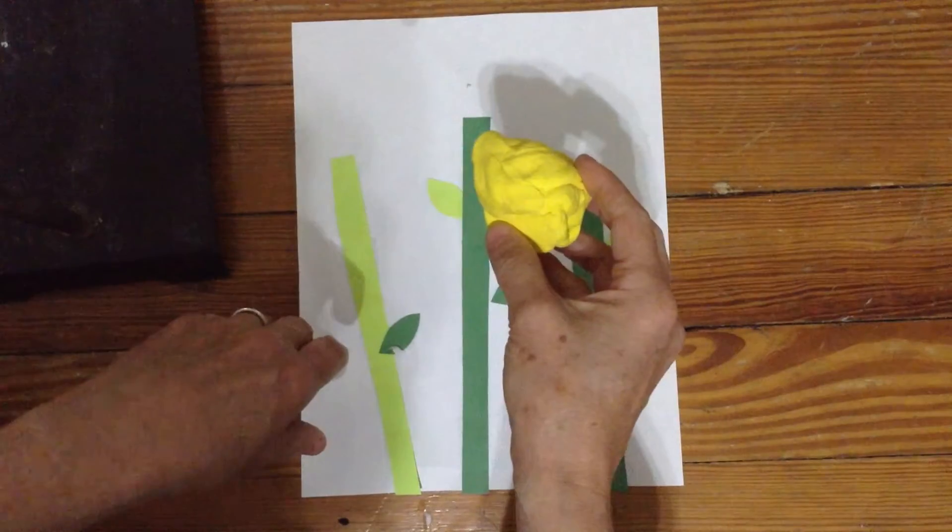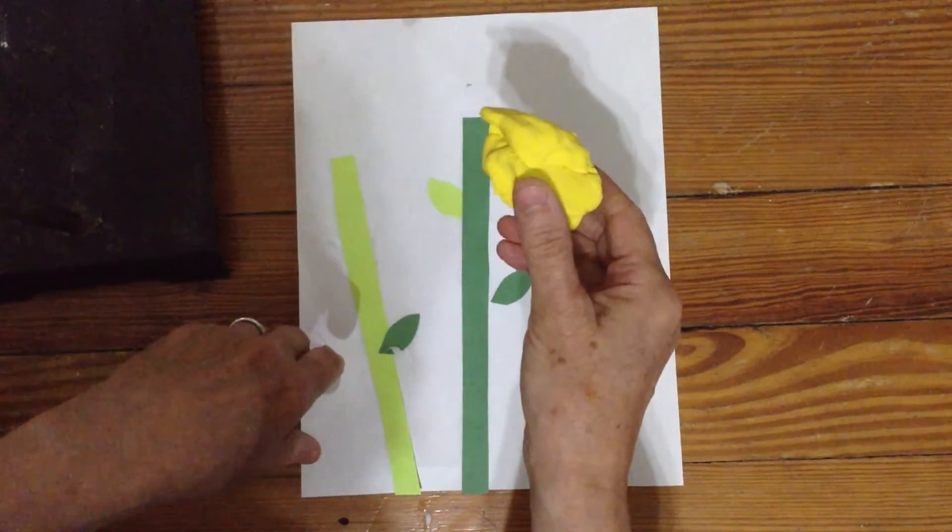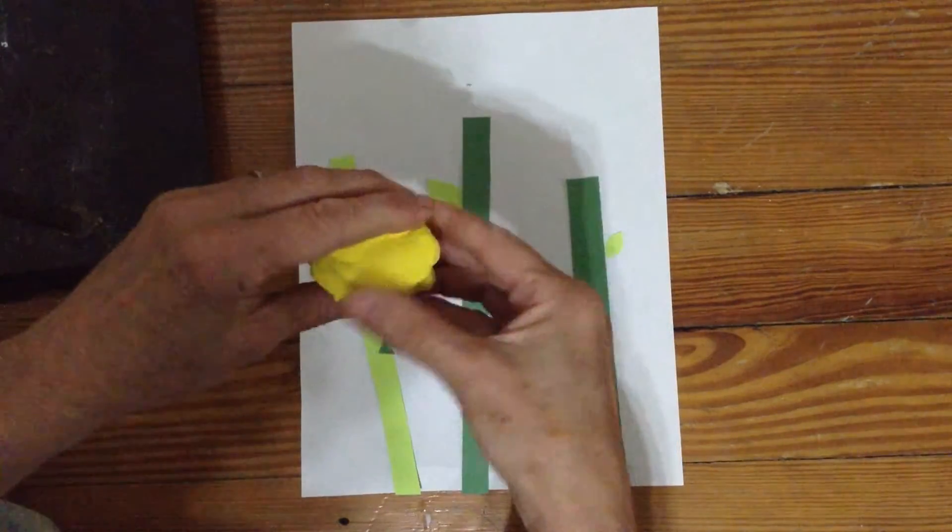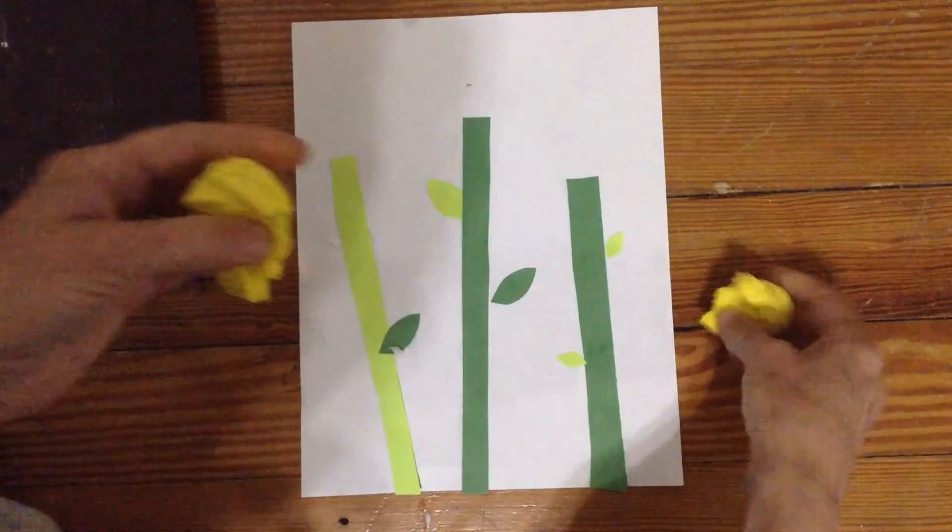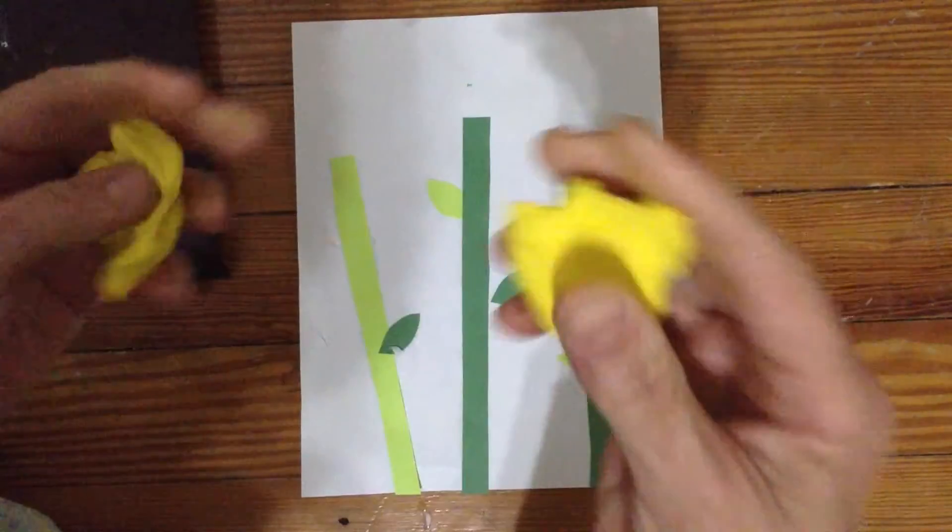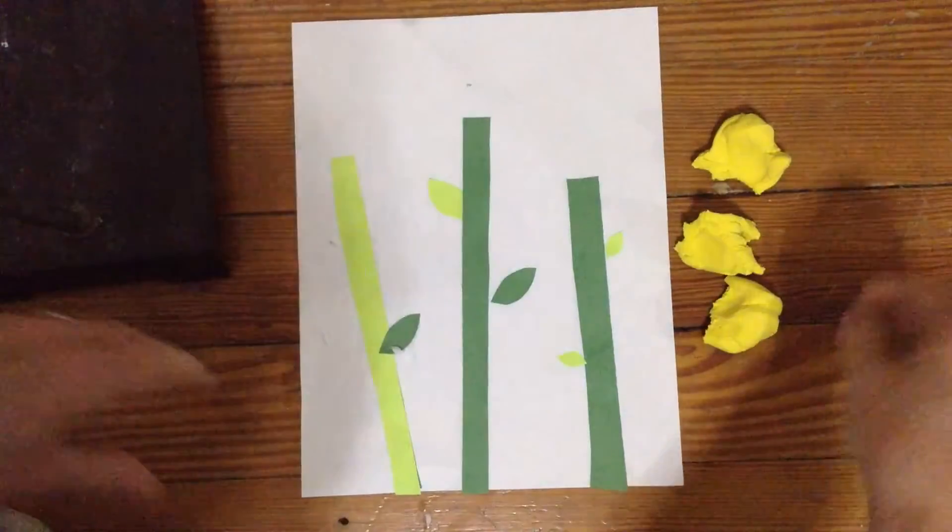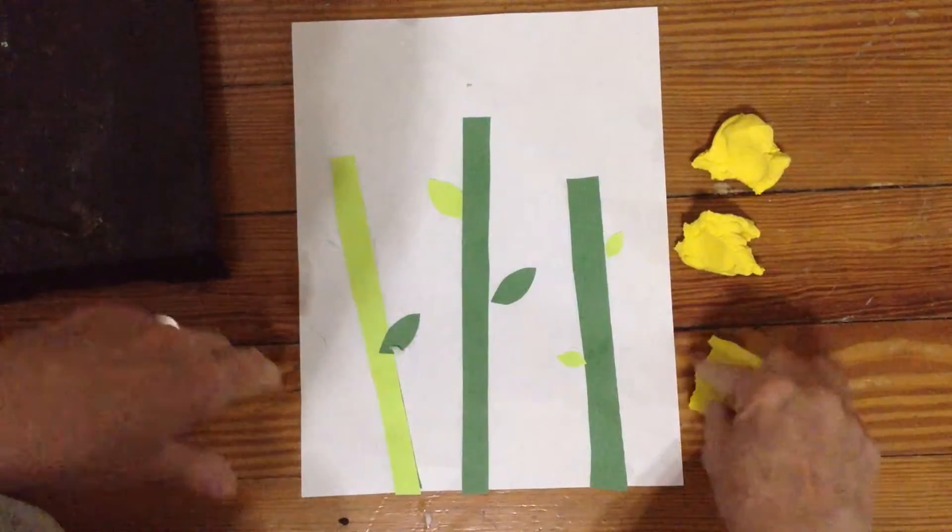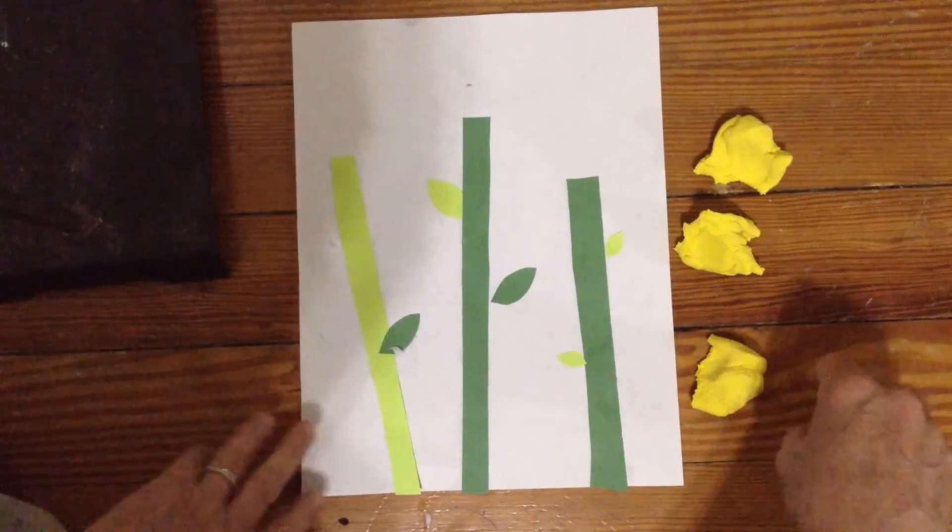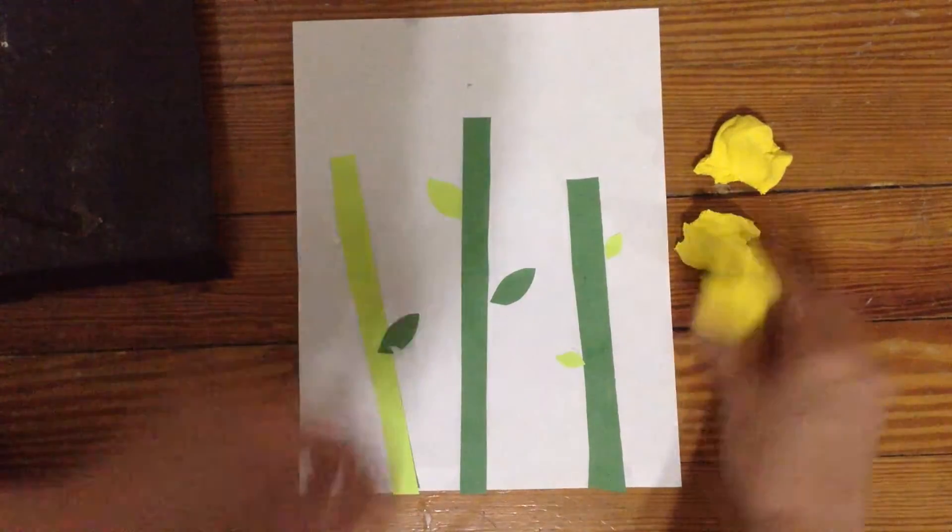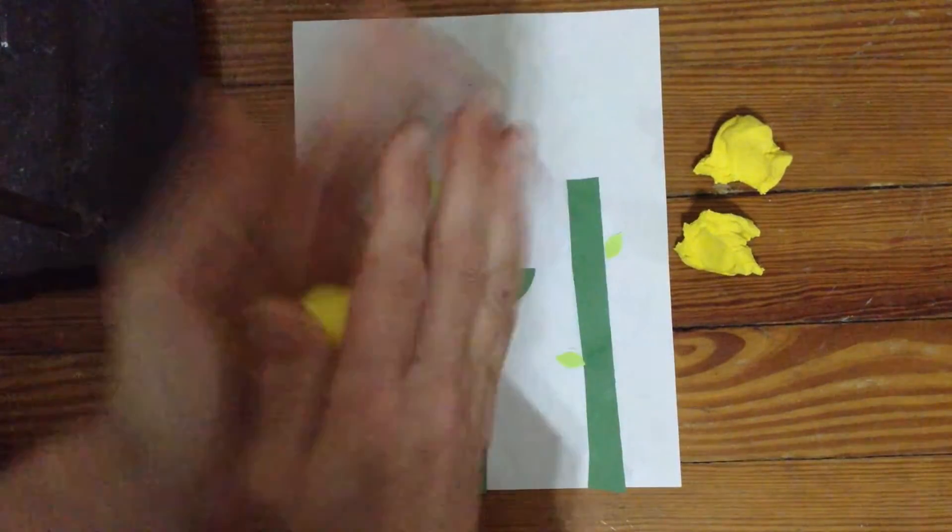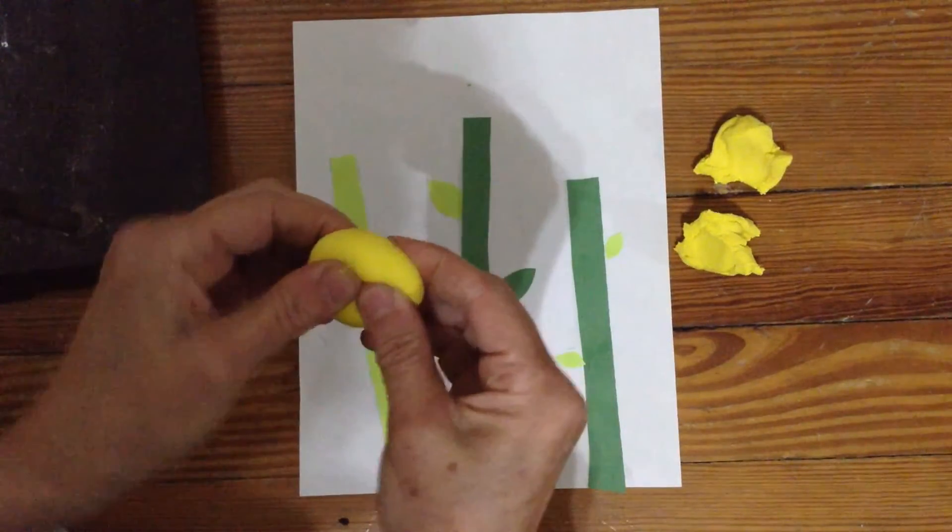Now you're gonna get a packet of Model Magic clay and you're gonna divide it into three somewhat even pieces and make three different flowers. I'm gonna show you three different ways to make a flower. They all start by rolling into a ball, pressing into a circle.